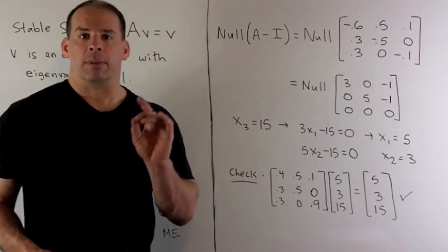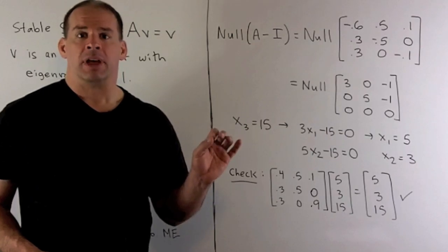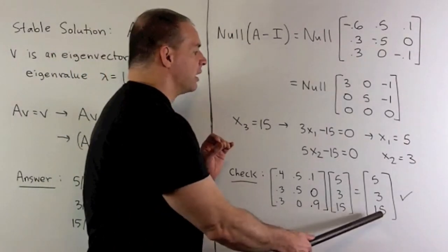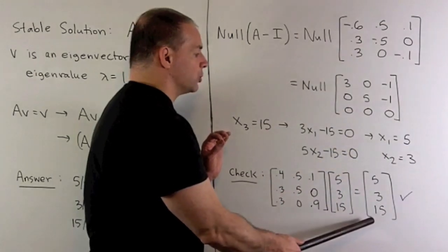To check my work, if I multiply that vector by A, I should get V back. If you work it out, that's going to be the case. That's my stable solution.